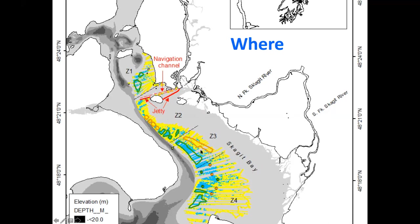The design was to do paired sampling — eelgrass and unvegetated — in each zone. Except in Zone 1, there was no comparable unvegetated area. This is a three-year study, and the unvegetated sites were added in the second year, so there are only eelgrass areas in the first year.